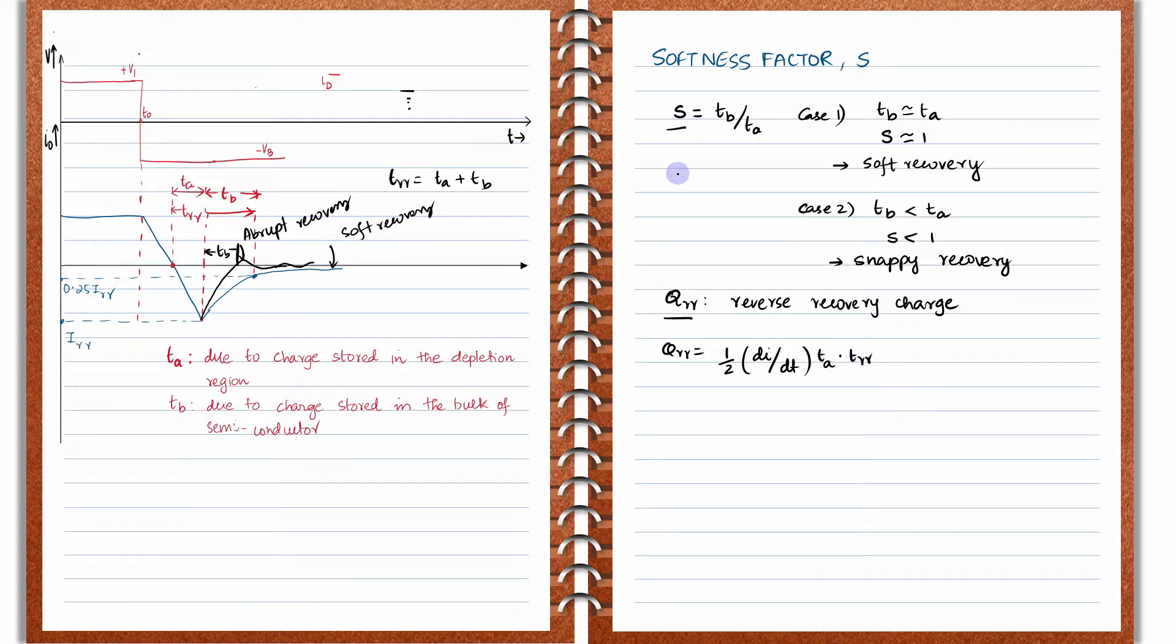Somewhere here we want to introduce the value of S. It's a very simple derivation. You know that S is equal to TB divided by TA, so that means TB will be equal to S into TA. Now you know that the total reverse recovery time TRR is equal to TA plus TB. Replacing TB by S into TA, you can get an expression like this: TRR equals TA plus S into TA. So TRR from this expression will be 1 plus S into TA.